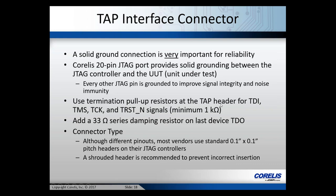Use termination resistors on your TAP pins — TDI, TMS, TRST, and TCK. We recommend a minimum of 1K ohm. You can also add a 33-ohm series damping resistor on the last device's TDO to help with overshoot and undershoot. Most vendors use a standard 0.1 by 0.1 inch pitch header. If you have real estate for a one-to-one pin interface that's ideal, but if you need an adapter cable ensure it has decent grounding.